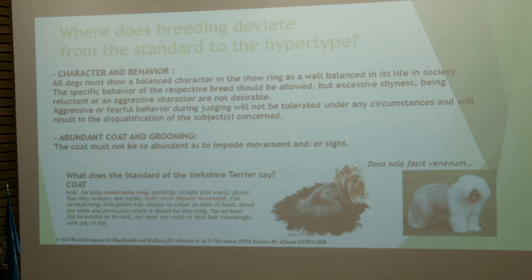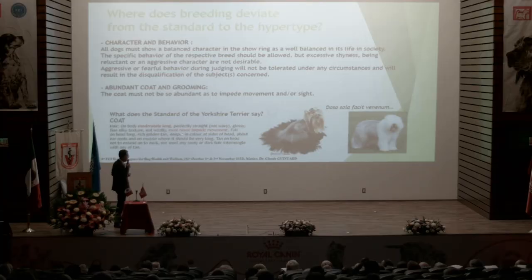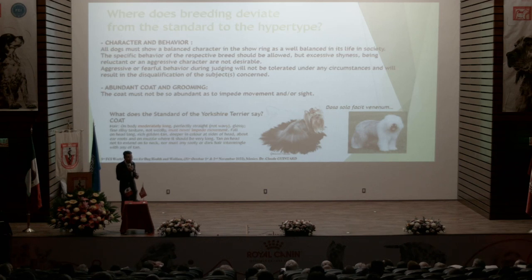Aggressive or fearful behavior during judging will not be tolerated under any circumstances and will result in the disqualification of the animal. On coat and grooming: the coat must not be so abundant as to impede movement and/or sight. For example, in the Yorkshire Terrier breed, the standard says: hair on body moderately long, perfectly straight, no wave, glossy, fine texture — must never impede movement. It's clearly expressed here that if we follow the standard, the animal cannot fall into the hypertype.